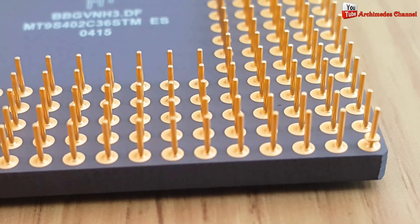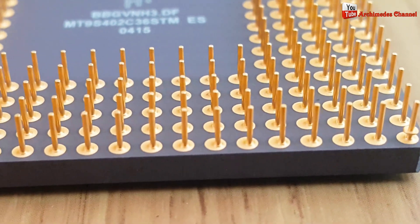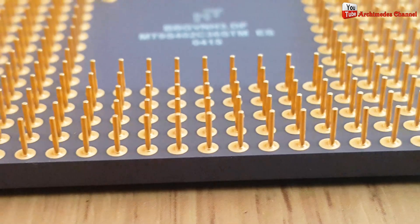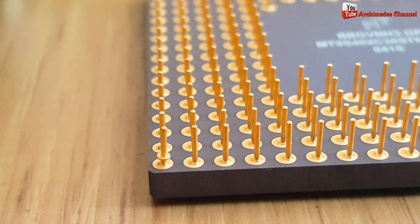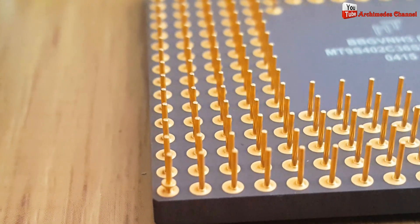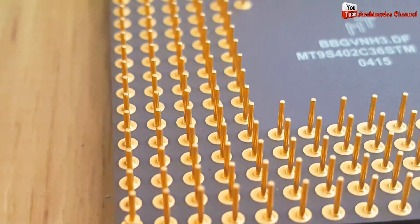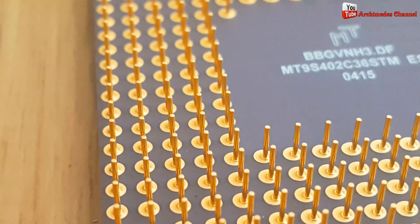Once at the facility, the electronic waste is sorted and separated into different materials such as plastics, metals and glass. Next, the metals are extracted from the electronic waste using a variety of techniques such as shredding, smelting and chemical leaching.